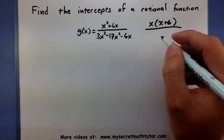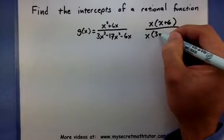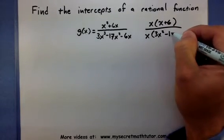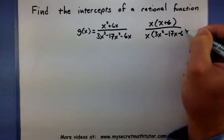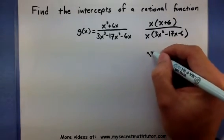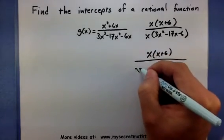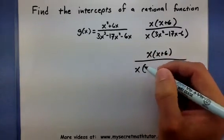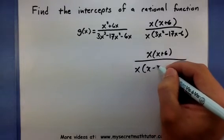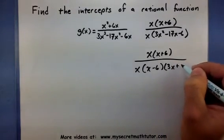Let's see, it looks like the bottom I can factor out an x out of that. 3x squared minus 17x minus 6. And looks like that factors even a little bit more. So I get x, x minus 6, 3x plus 1. Perfect.